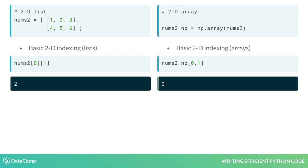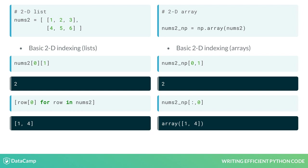The analogous list syntax is a bit more verbose as you have to surround both the zero and the one with square brackets. To return the first column of values in our 2D object, the array syntax is nums2_np[:,0]. Lists don't support this type of syntax, so we must use a list comprehension to return columns.